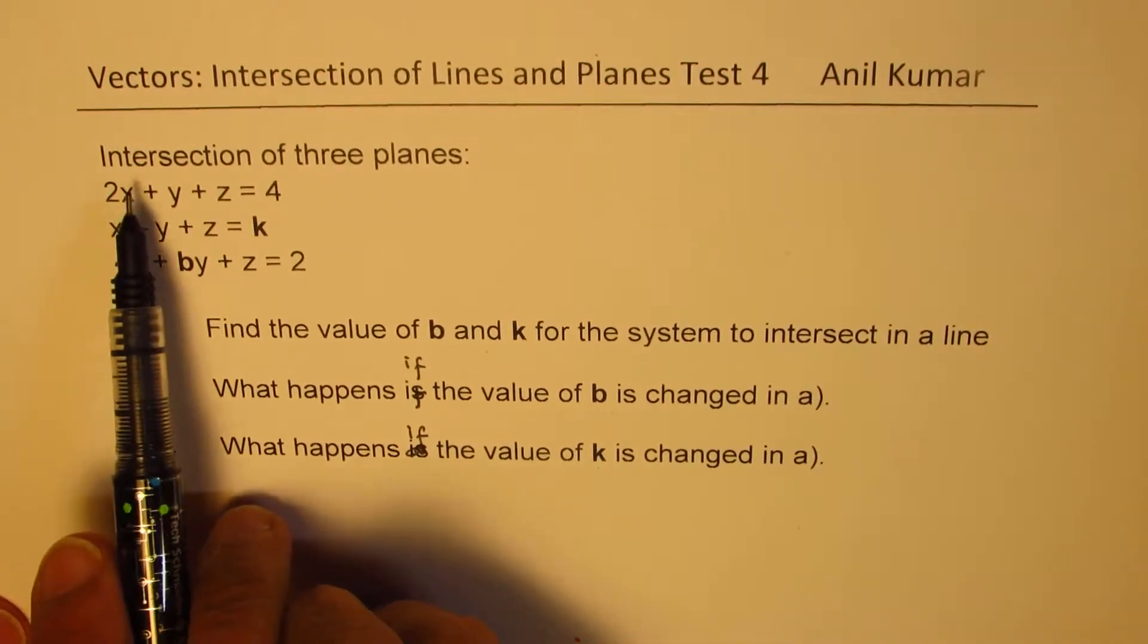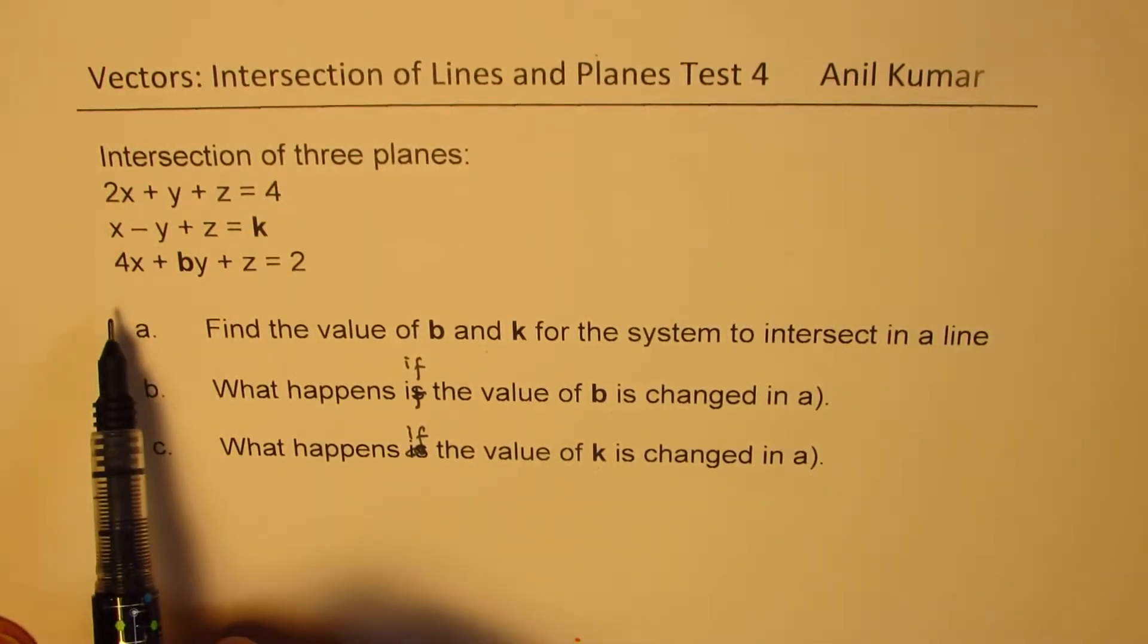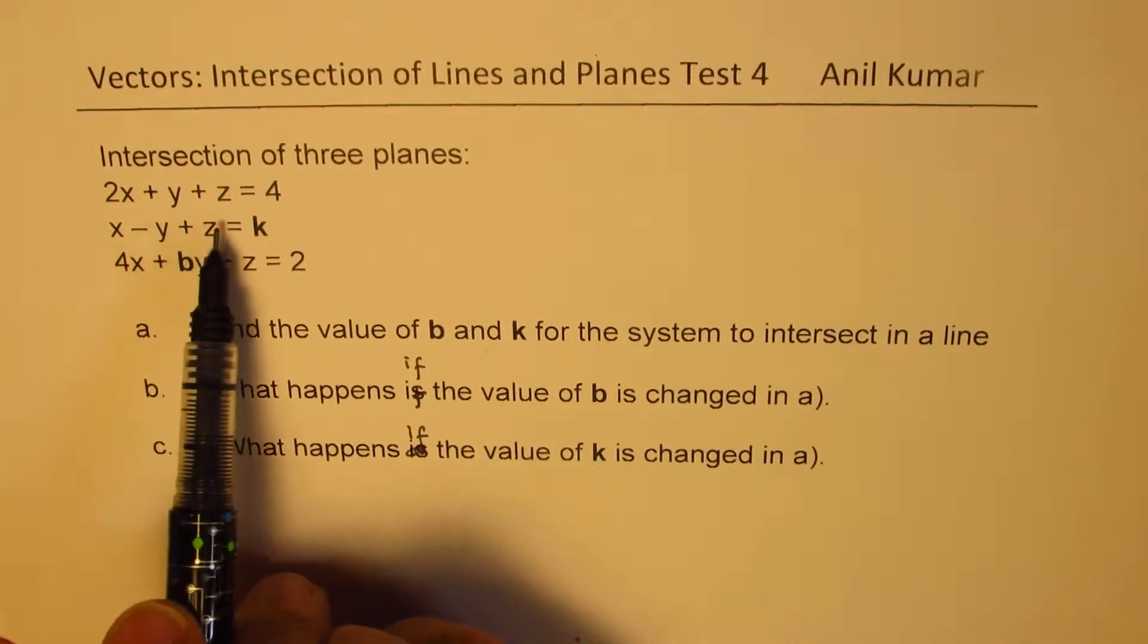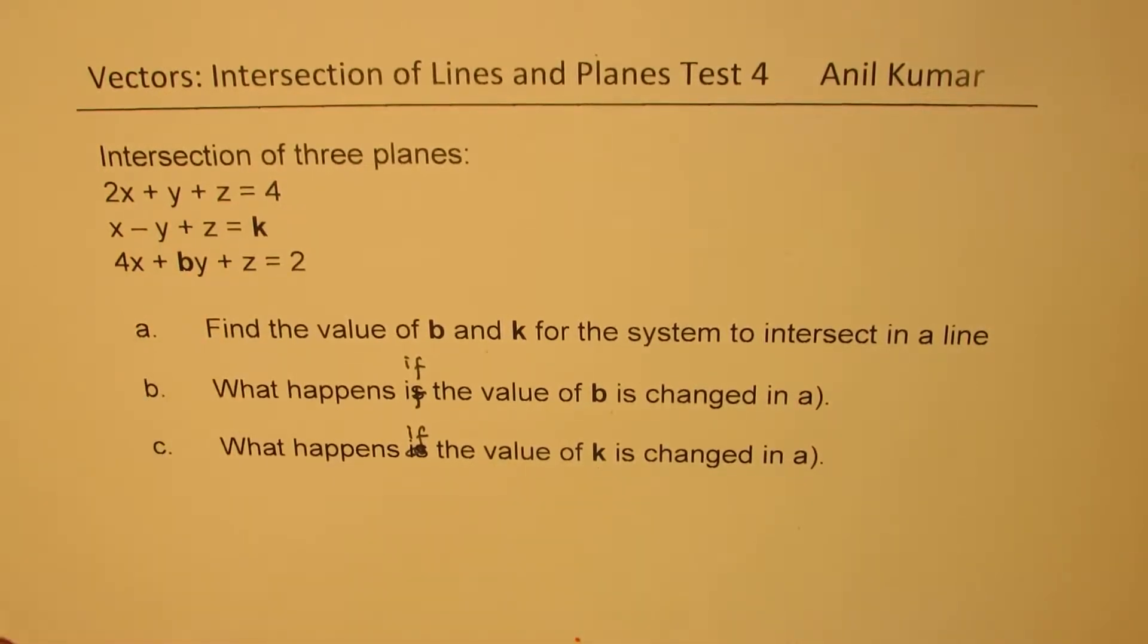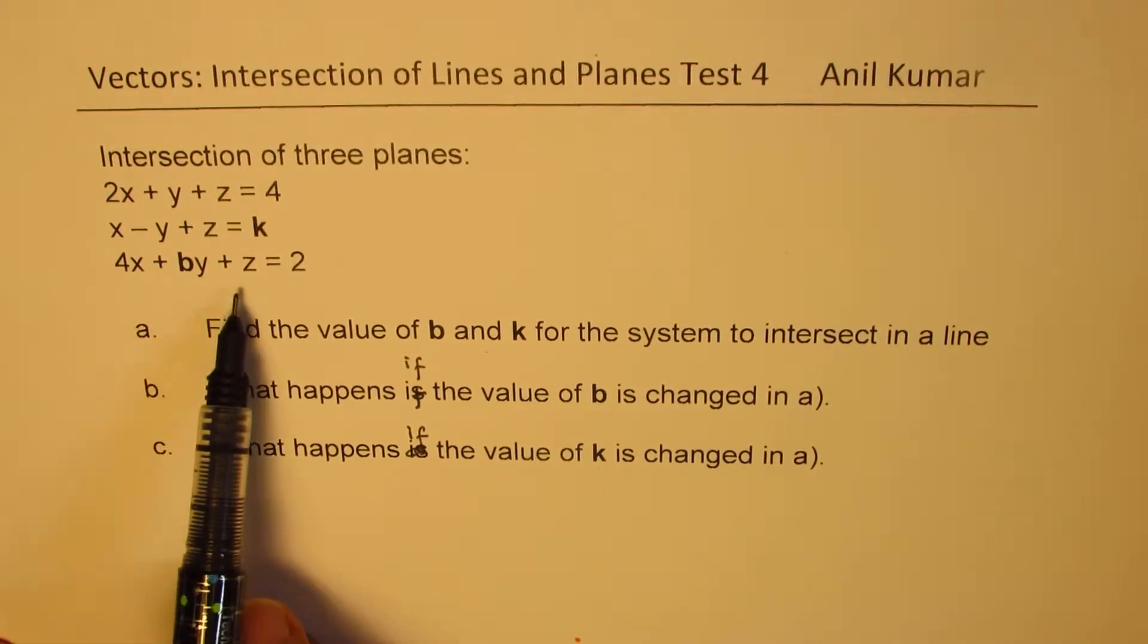So we are considering intersection of three planes whose equation is given here. 2x plus y plus z equals to 4, x minus y plus z equals to k, 4x plus by plus z equals to 2.